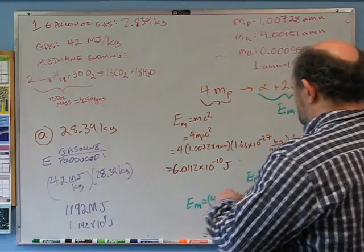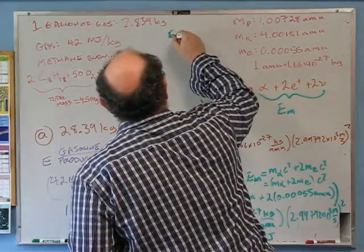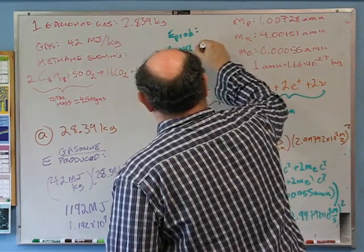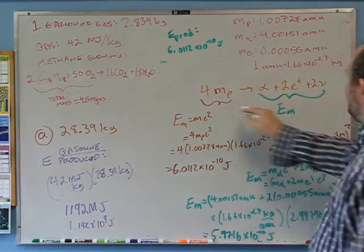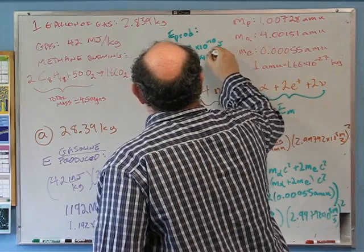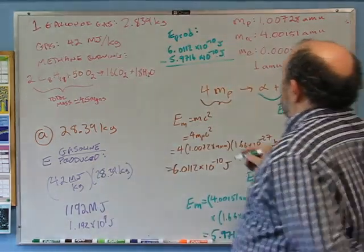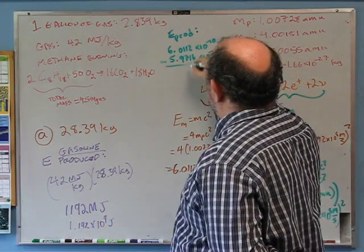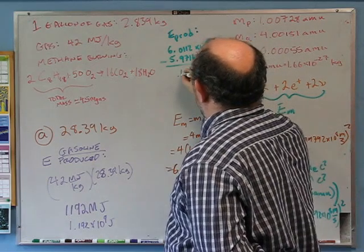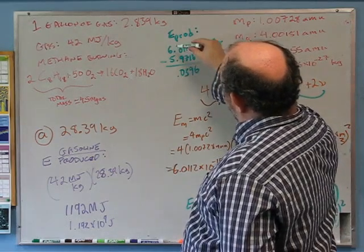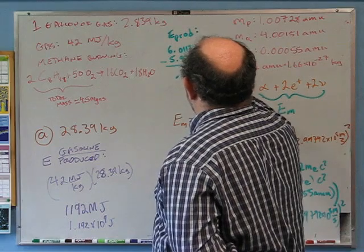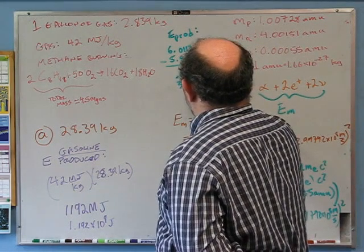The energy produced equals the total energy we started with (6.0112×10⁻¹⁰) minus the mass at the end (5.9716×10⁻¹⁰ J). Subtracting: 6.0112 − 5.9716 = 0.0396, so that's 0.0396×10⁻¹⁰ joules, which is 3.96×10⁻¹² joules. That is the amount of energy produced in one fusion reaction.